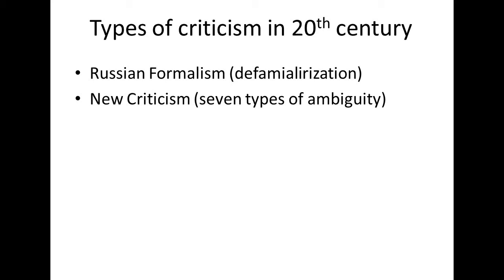The movement which started in Russia is called Russian Formalism, and the same tendency — the movement with the same notions and the same philosophy — was there in America, and that was named as New Criticism. The pattern or the philosophy on which people were working in Russia was named Russian Formalism, and those who were working in America named it New Criticism, while the tendency and the rules were almost the same.